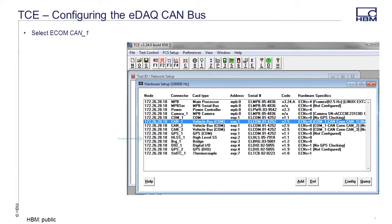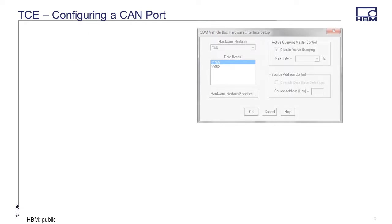In the table of hardware, select a CAN vehicle bus. Select the Config button. You can also double click on the CAN bus of interest to configure that particular CAN bus port. Next, click on the Hardware Interface Specifics button to open the CAN interface setup dialog.